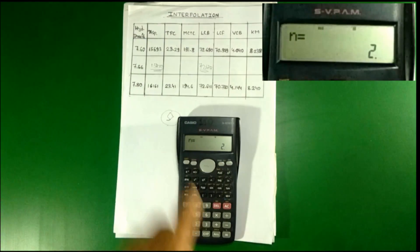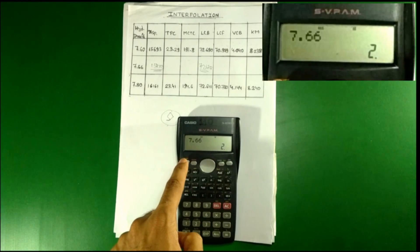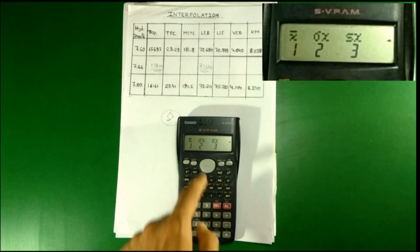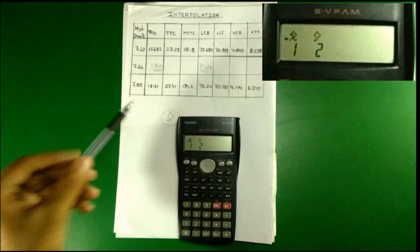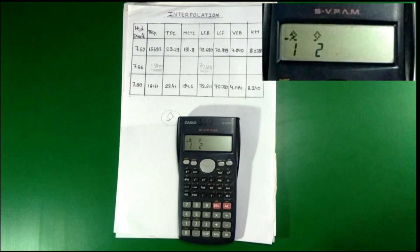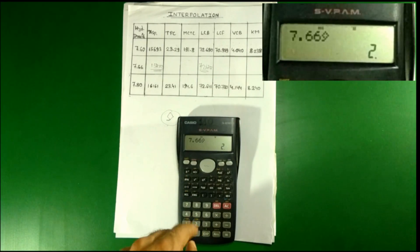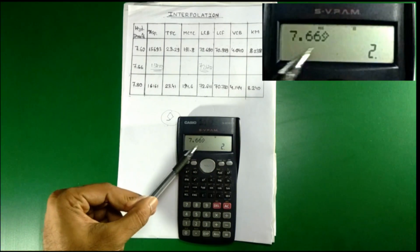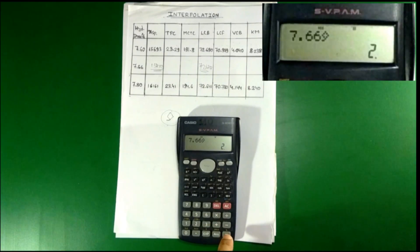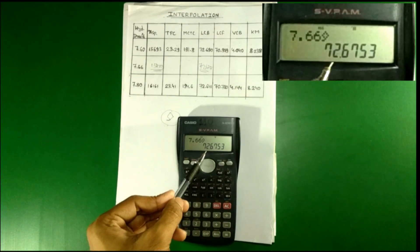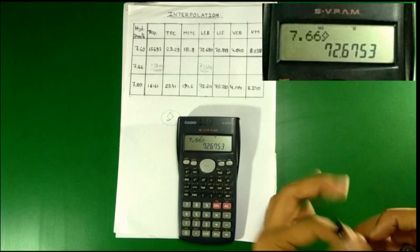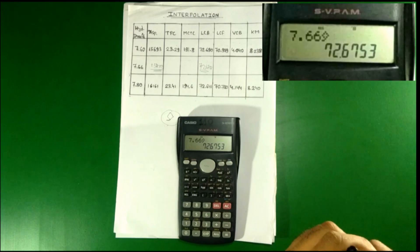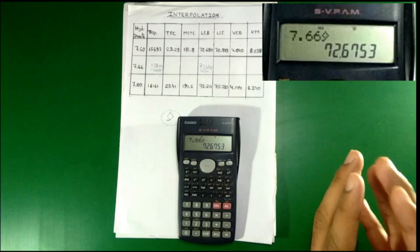Now press 7.66, then Shift and 2. You will see symbols on your screen — navigate to the end to find the interpolation symbol, then press 2 to select it. You will see the symbol appear after 7.66. Press Equal. The answer is 72.6753. This is how you can use a scientific calculator for interpolation directly without pen and paper.